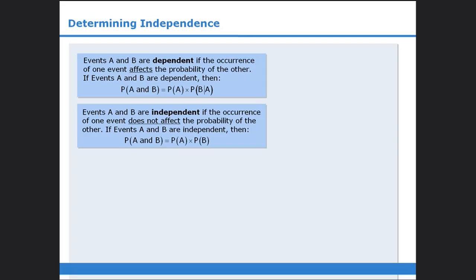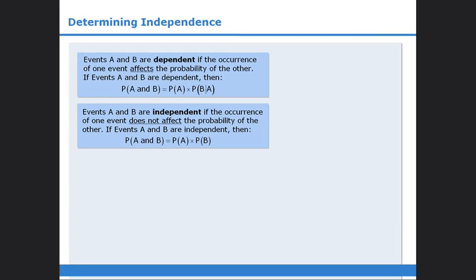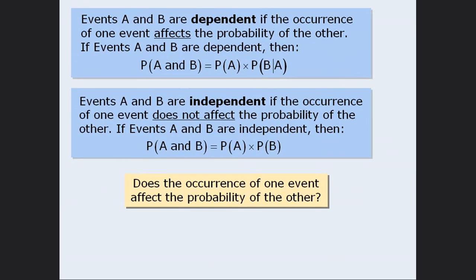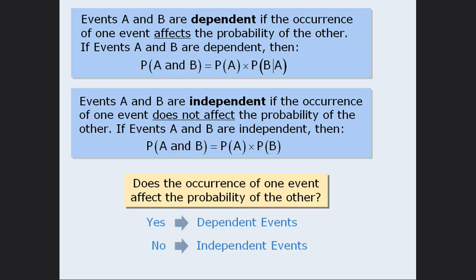In a previous lesson, we learned that two events can be dependent or independent. In this lesson, we will practice determining whether two events are dependent or independent. To do this, we will ask the question: does the occurrence of one event affect the probability of the other event? If the answer is yes, then the two events are dependent. If the answer is no, then the two events are independent.